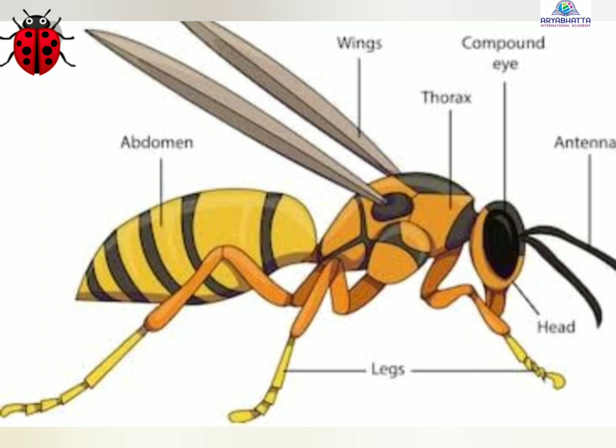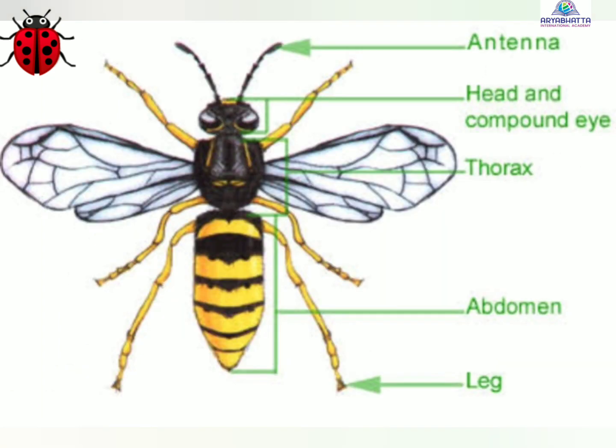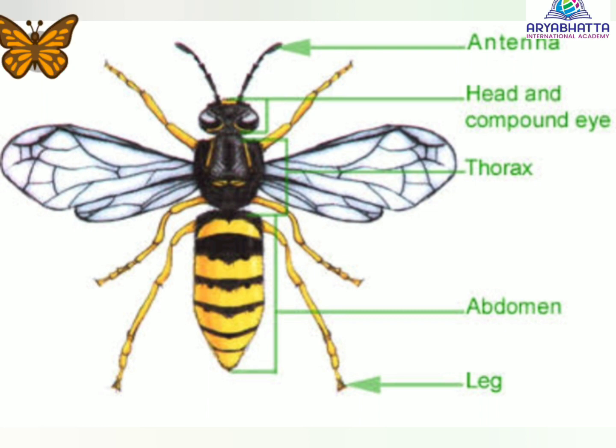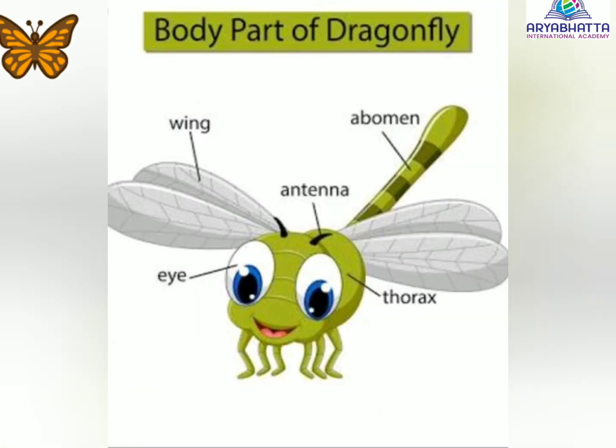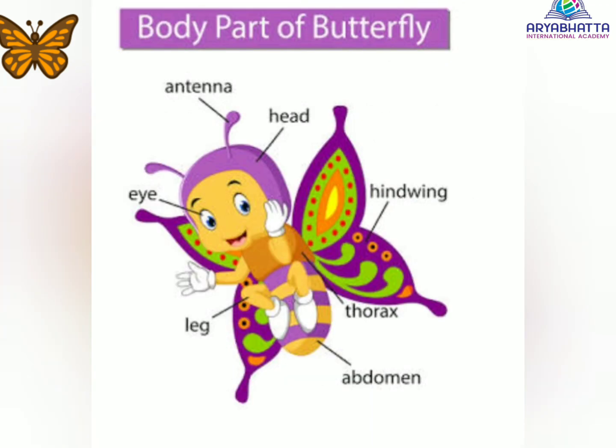Thorax is the middle part of the body. This part of the body bears three pairs of legs and one or two pairs of wings.